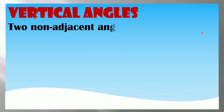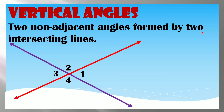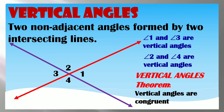Vertical Angles are two non-adjacent angles formed by two intersecting lines. In this figure there are two pairs of vertical angles: Angle 1 and Angle 3, and Angle 2 and Angle 4. Angles across from each other are vertical angles, while angles beside each other form a linear pair. The Vertical Angles Theorem states that vertical angles are congruent.